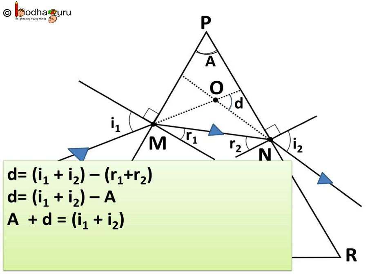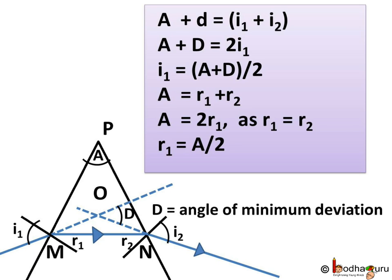Now if the ray has minimum deviation, then I1 is equal to I2 because in that case the ray passing through the prism is parallel to the base. So A plus D is equal to 2I1, or I1 equals A plus D by 2. Similarly, A will become equal to 2R1. This is because as I1 is equal to I2, R1 becomes equal to R2. Thus we can say R1 is equal to A by 2.